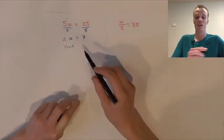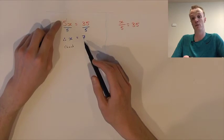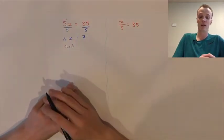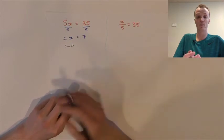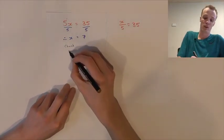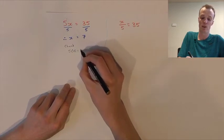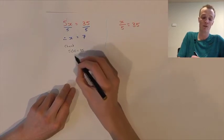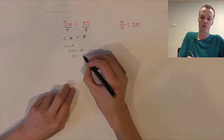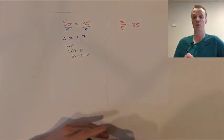In our check step, if we substitute the value we found for x back into the original equation, the equation should balance. So wherever we see an x, we substitute that 7. We've got 5 multiplied by 7 should equal 35. We know that 5 times 7 is 35, and 35 does equal 35 — therefore we've found the correct solution.